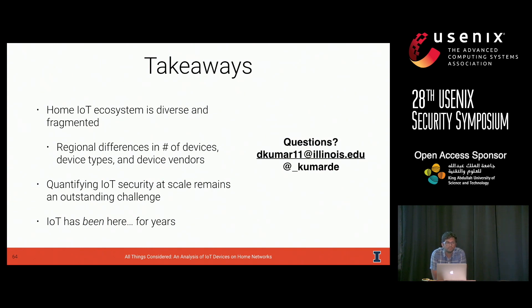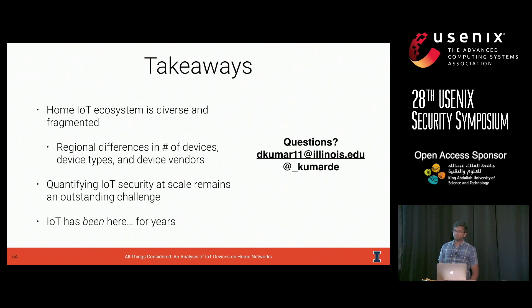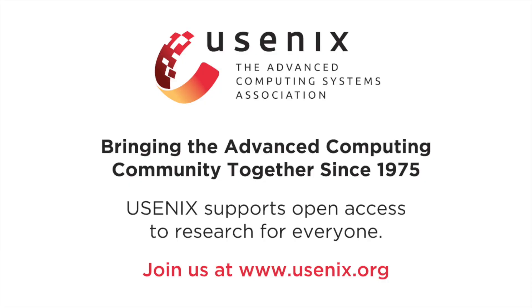Thanks, Deepak. Let me start off with a kind of obvious question: do you have any sense for the demographics of the people who run Avast Wi-Fi scanner and how those differ from the overall demographics? Yeah, it's a really good question. These are people running some kind of security software, so the guess is that they are more security conscious. This may inflate the number of devices, and the security posture of those devices may actually be better. Our intuition is that this is actually a lower bound in terms of the number of security problems we see in the ecosystem. Before you go, let's give a big round of applause to all the speakers in this session. Thank you all very much.